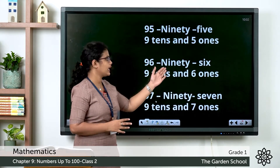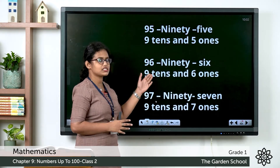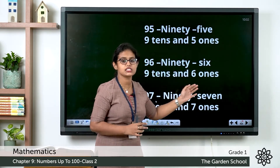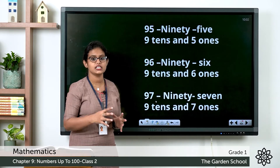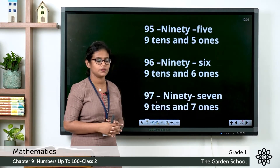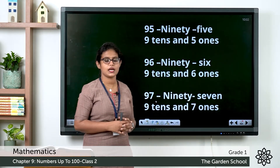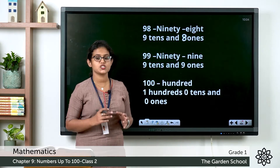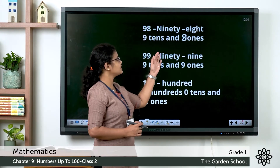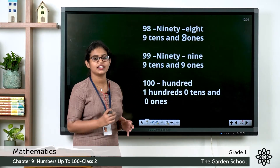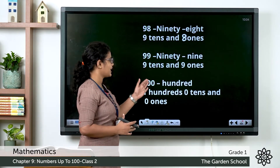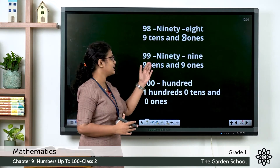The next number is 96. 6 in ones place, 9 in tens place — 9 tens and 6 ones makes 96. Then after 96 it is 97. So 9 tens and 7 ones makes 97. The next number is 99. 9 tens and 9 ones makes 99.